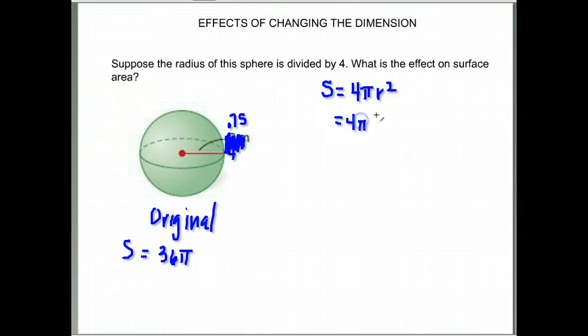We have a new radius of 0.75. Our surface area should be 4π times that radius squared. So 4 times π times 0.75 squared. I'm going to square 0.75. That gives me 4 times π times 0.5625. Then multiply by 4 and I get 2.25π.